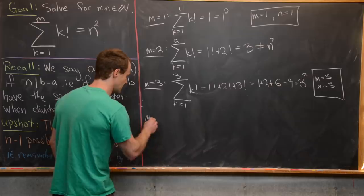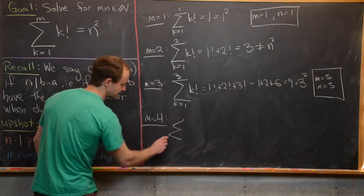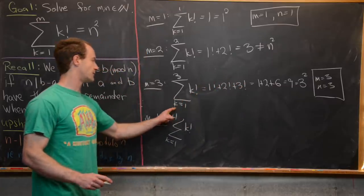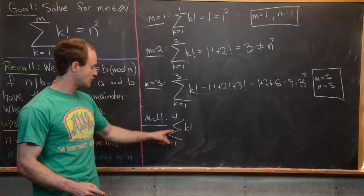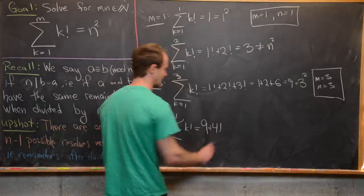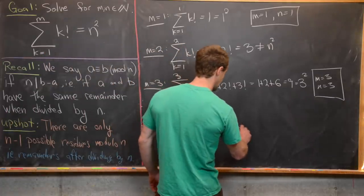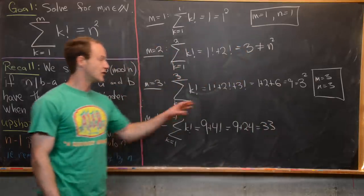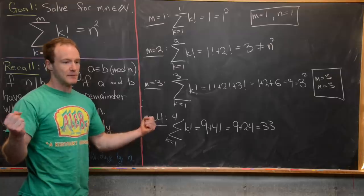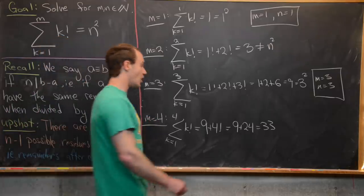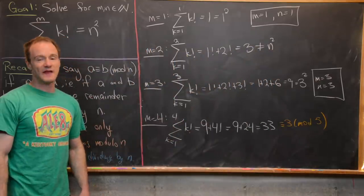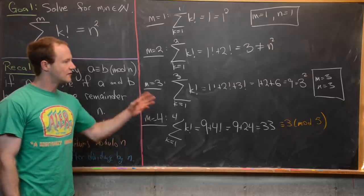For m equals 4, we can use the partial sum we already computed. The sum from k=1 to 3 was 9, and the extra term is 4! = 24. So we get 9 + 24 = 33. That is not a perfect square — 25 is 5² and 36 is 6², so we miss 33. Also notice 33 is congruent to 3 mod 5, and we've determined that 3 is never a perfect square modulo 5.